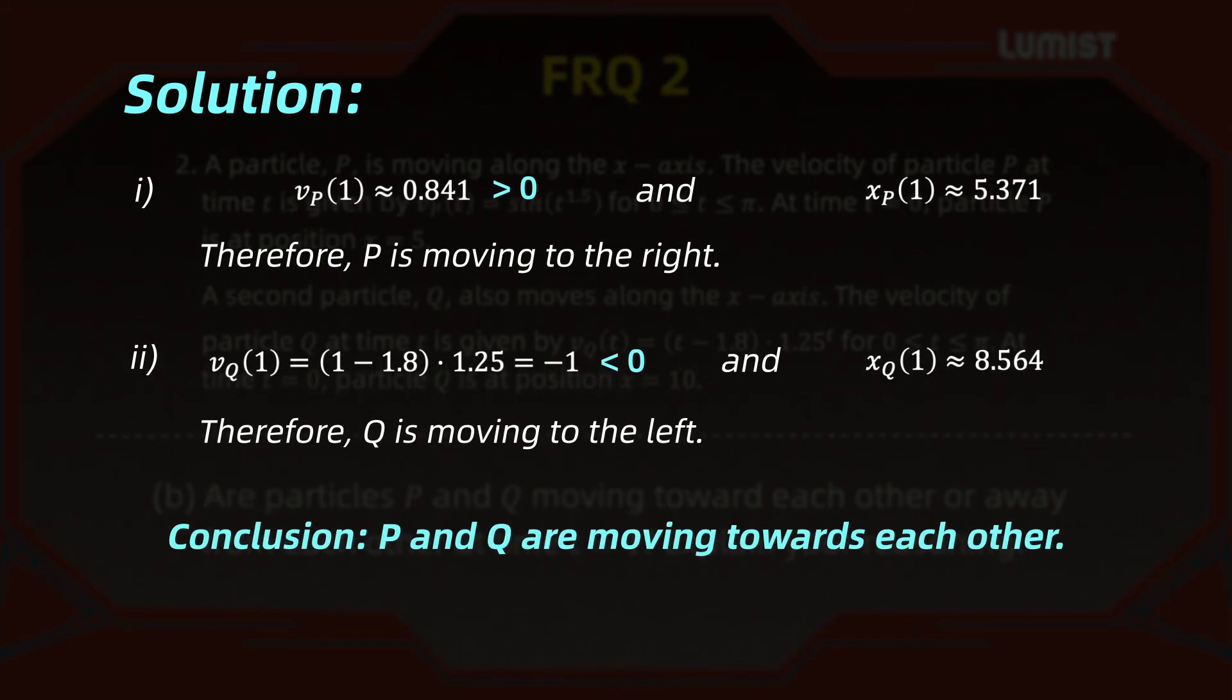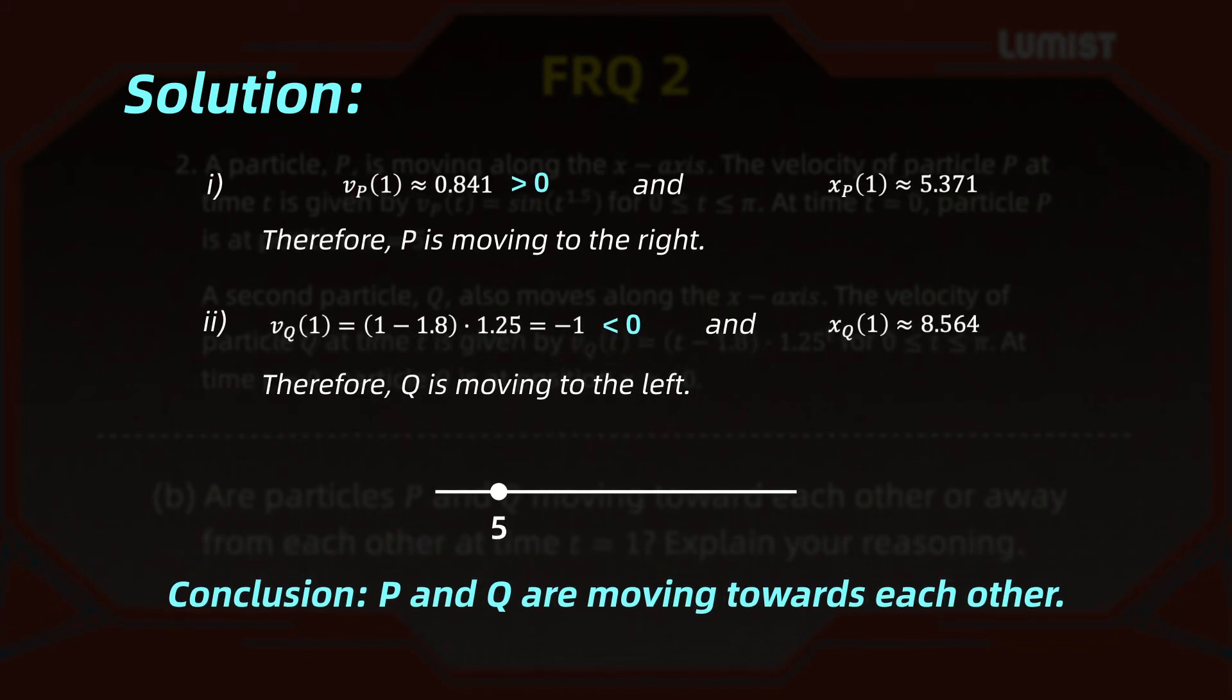If you want to convince yourself about this fact, notice that the position at 1 is 5, and the velocity is positive. So we have P at 5 moving to the right. But Q has position approximately 8 and the velocity is negative, so Q is moving to the left. So they are moving towards each other. That's part B.